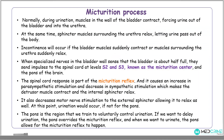Normally, during urination, the detrusor muscle — the muscles of the bladder wall — contract, forcing urine out of the bladder into the urethral opening. At the same time, the urethral sphincter muscles that surround the urethra relax, letting urine pass out of the body. Urinary incontinence occurs if the bladder muscles suddenly contract or the muscles surrounding the urethral opening suddenly relax. The specialist nerves in the bladder wall sense that the bladder is about half full of urine, and this sends impulses into the spinal cord at levels S2 and S3, in an area known as the micturition center, and into the higher centers of the brain.